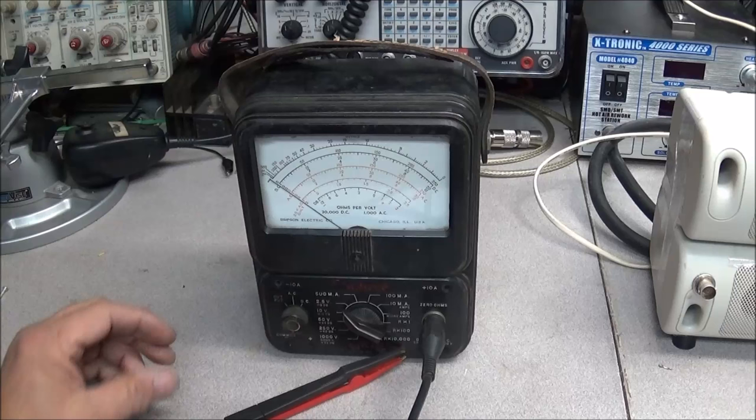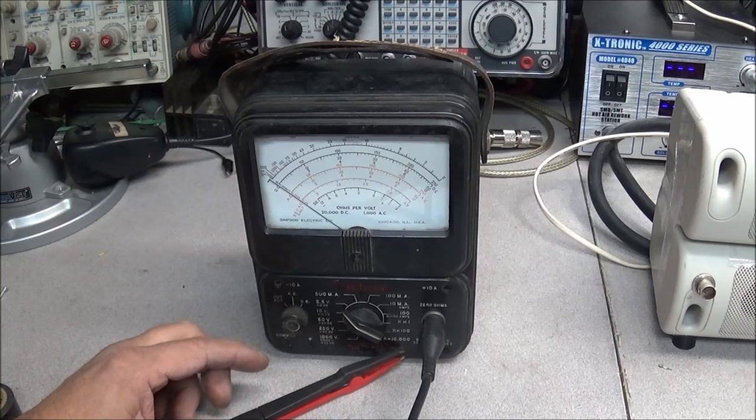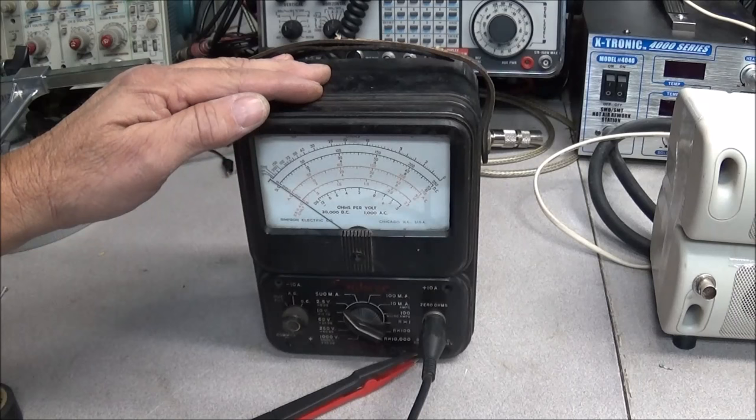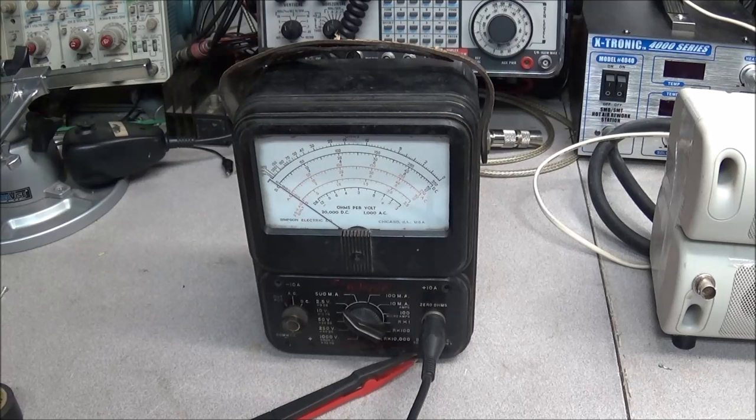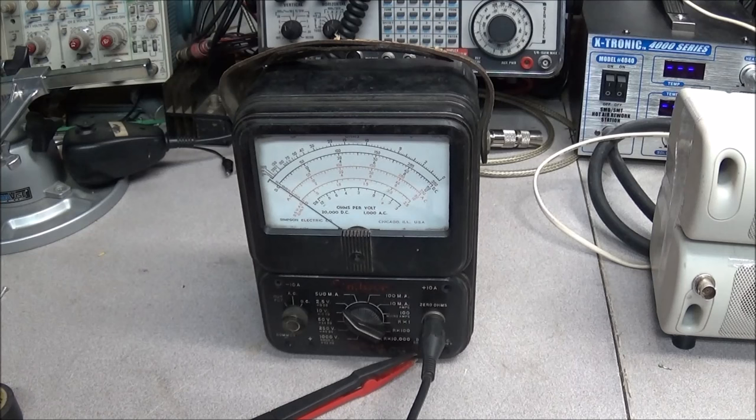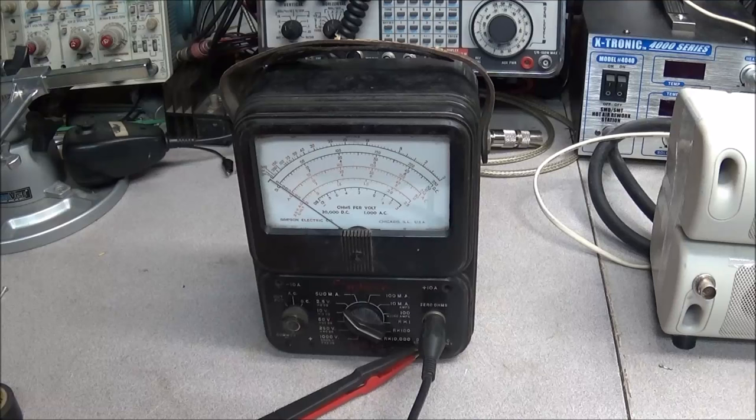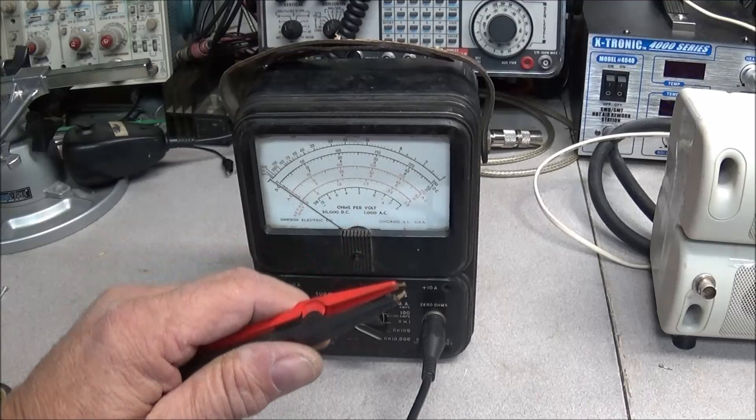I just threw this thing together yesterday, made the board, etched it out and put all the components on it. I looked around in the shop and decided that the old Simpson 260 would be a good candidate to house this ESR meter project. In Allen's video he didn't have a meter available so he used his Simpson 260 to demonstrate the circuit. All I did was remove all the guts out of it and the zero ohm part is now a BNC connector.